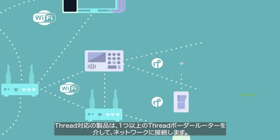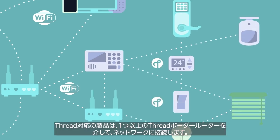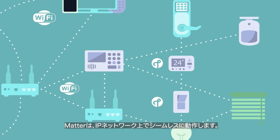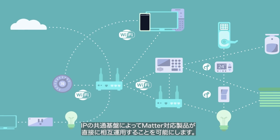Thread devices connect to the network through one or more Thread border routers, which may be built into Wi-Fi routers, hubs, or other smart home devices. Matter works seamlessly over all these IP networks. The common foundation of IP enables them to interact directly with each other, using a single application protocol: Matter.